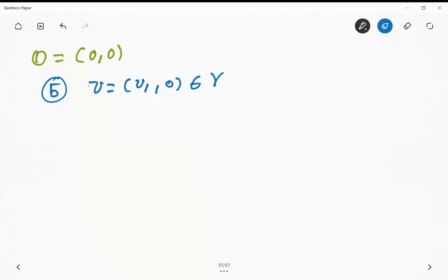And what the fifth axiom says is that it exists the inverse of this, denoted by minus u, that should satisfy that u plus minus u is equals to the null vector.